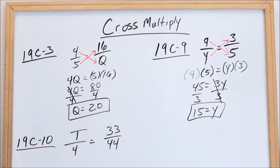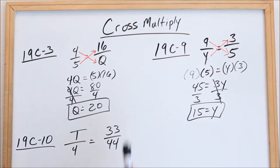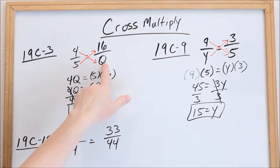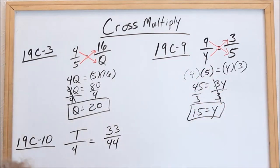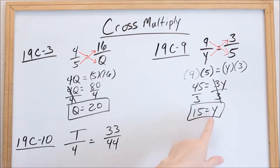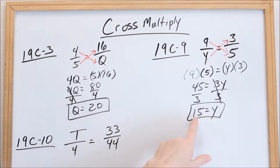The reason I think this is easy is because it doesn't matter where your variable is. The letter could be on the left or the right — this works every time. And it doesn't matter if you end up with a variable on the right-hand side or the left-hand side of the equal sign.